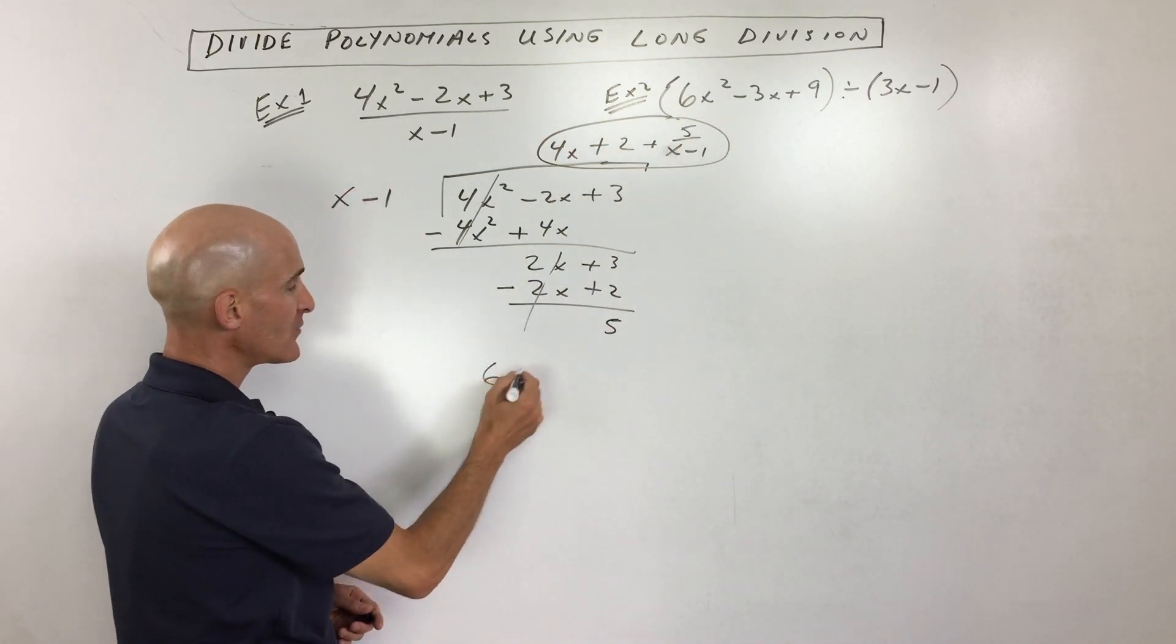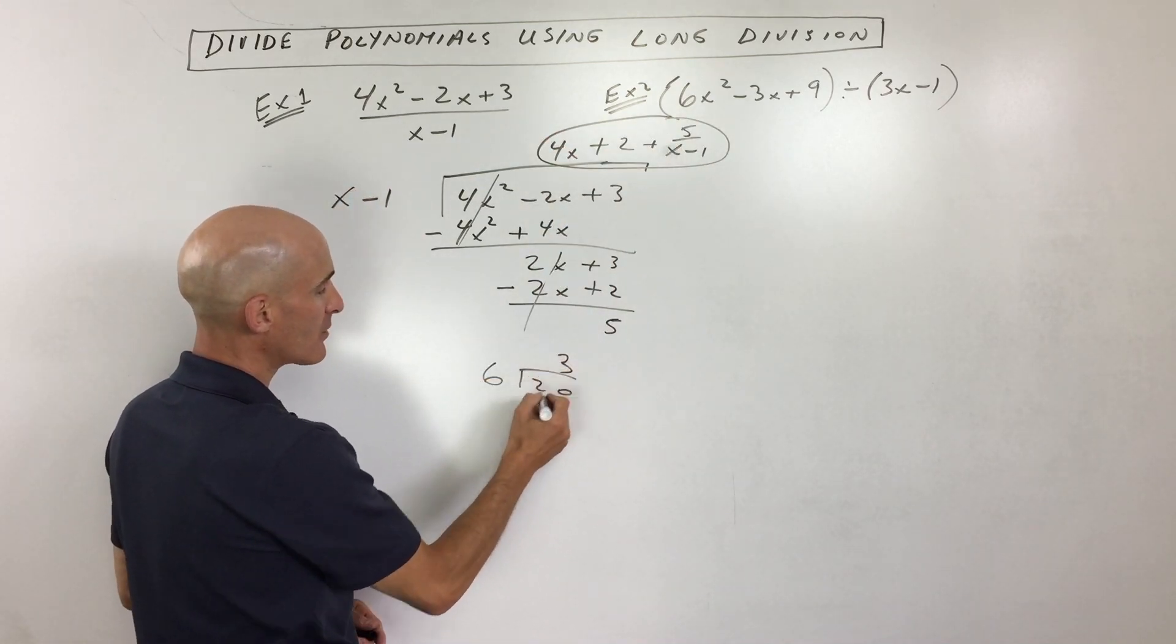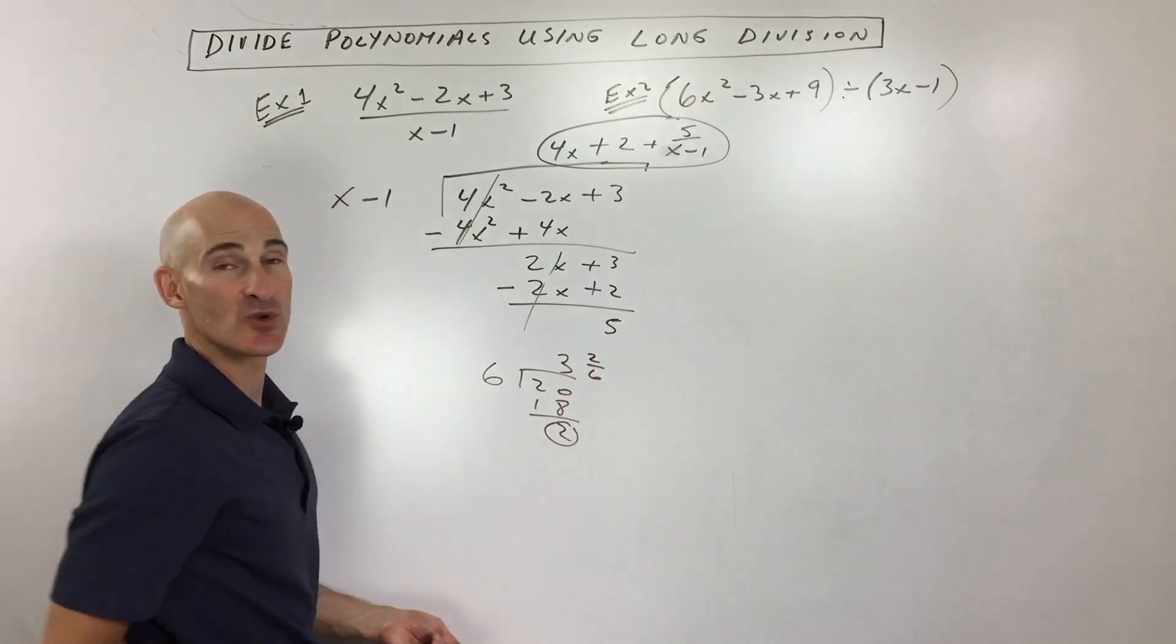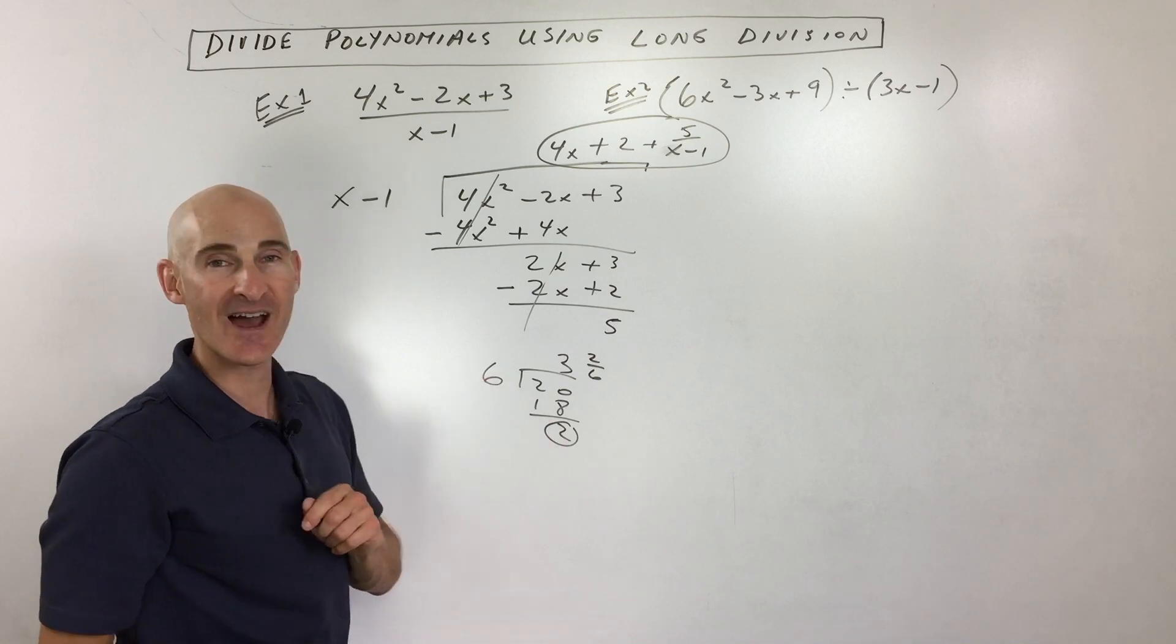Okay, it's just kind of like if you said how many times does 6 go into 20? 3 times remainder 2. Now what do you do with the 2? You say 3 and 2 over 6 and you can reduce that down. You put the remainder over the divisor.